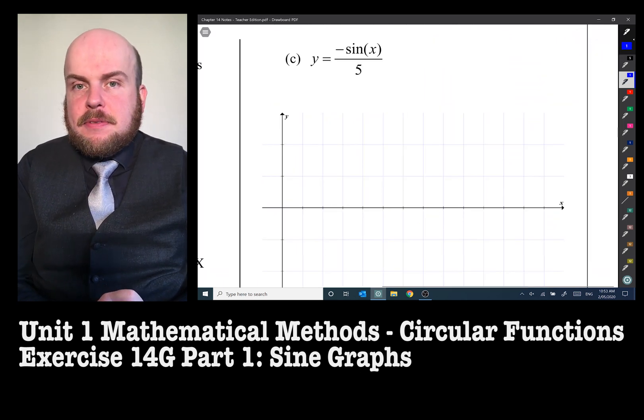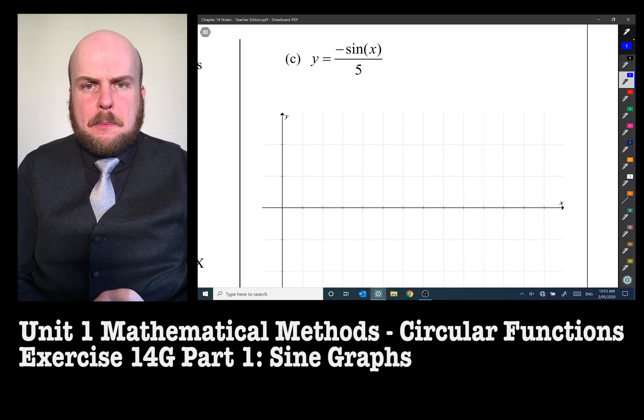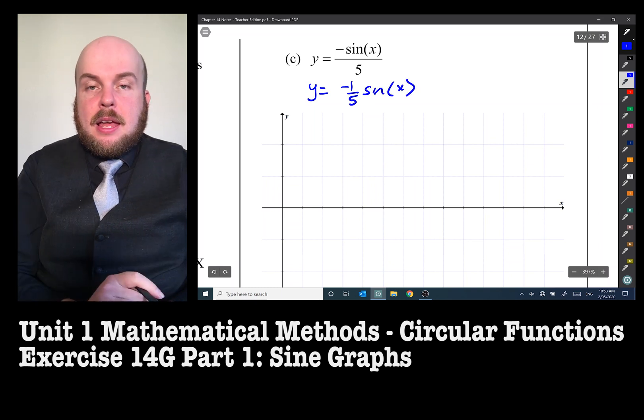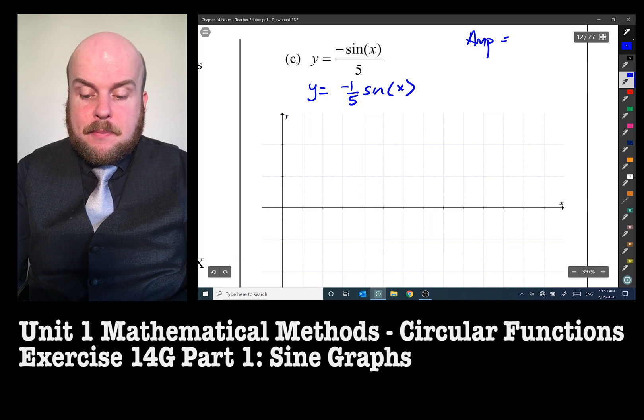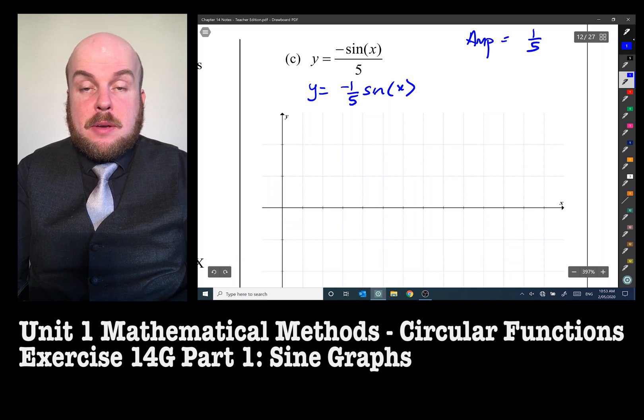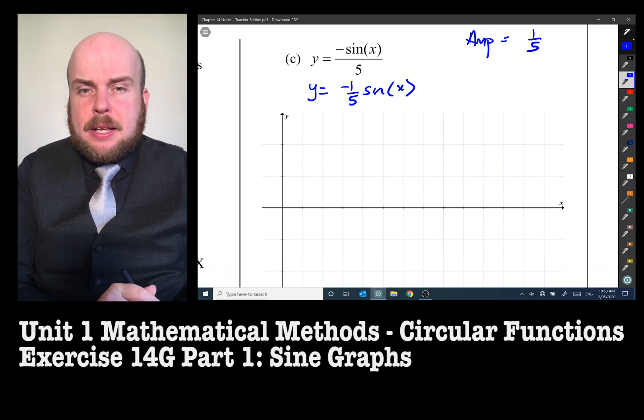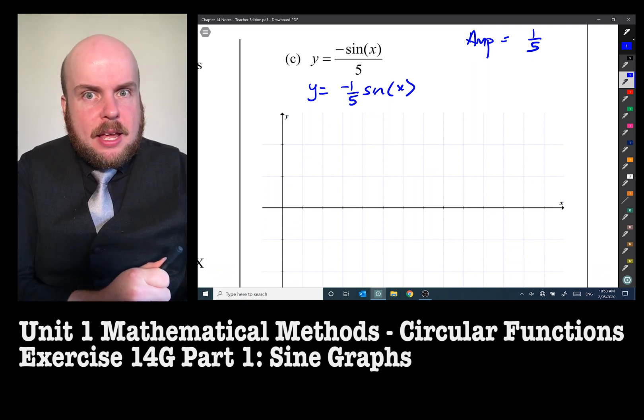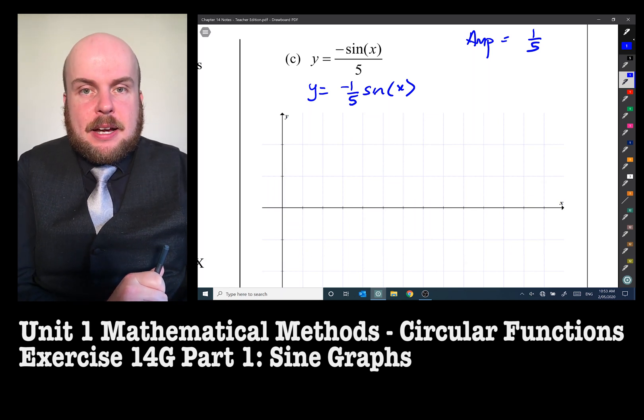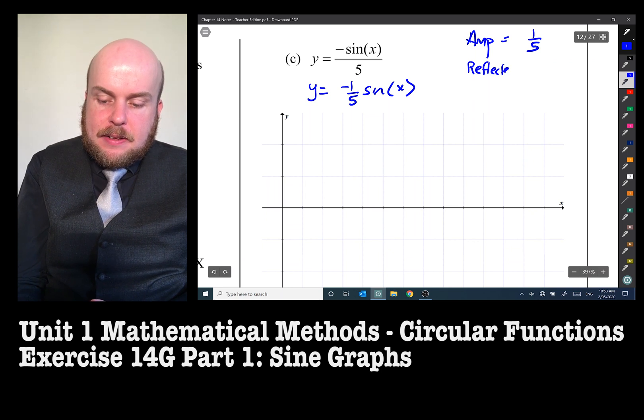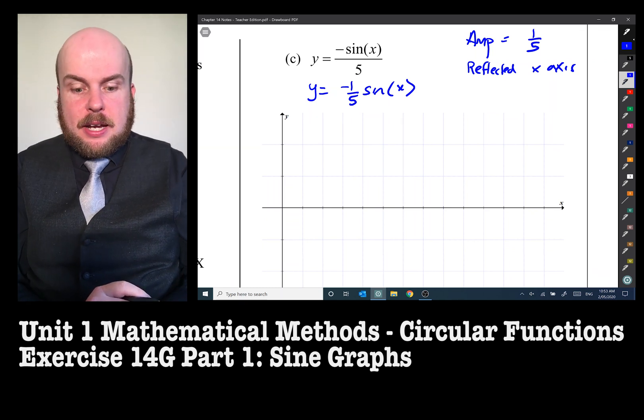Y equals negative sine x over five. Now this looks a little bit complicated until you actually rewrite it as negative one fifth sine x. Now in that case, I know my amplitude is one fifth. Now you might be saying, but wait a minute, Mr. Ennis, isn't it negative one fifth because there's a minus sign? Ah, there's the trick. That is not the amplitude. That negative sign is just telling me that the graph is upside down. So I'm just going to say it's reflected in the x axis. And this reminds me that we're going to be drawing an upside down sine graph.